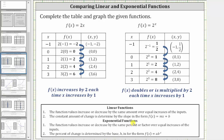And for exponential functions, we can say the function values increase or decrease by the same percentage or factor over equal increases of the inputs. Again, we noticed here the function values were doubling, or being multiplied by a factor of two, each time x increased by one. And the percent of change or factor is determined by the base b in the form f(x) = a times b raised to the power of x. Notice here our base is two.